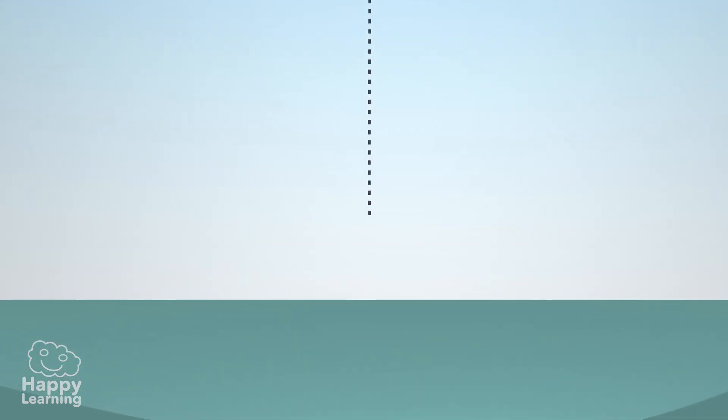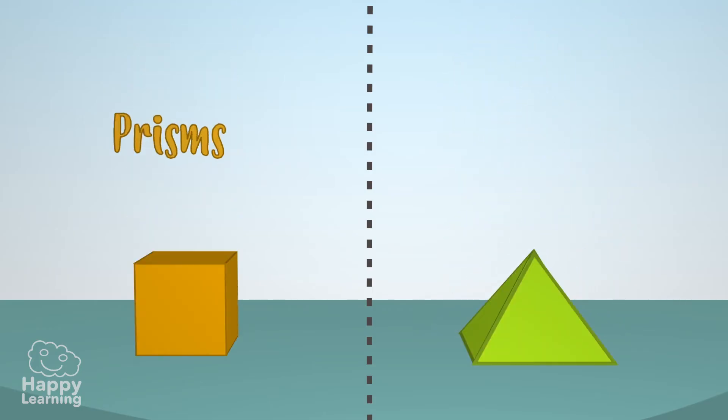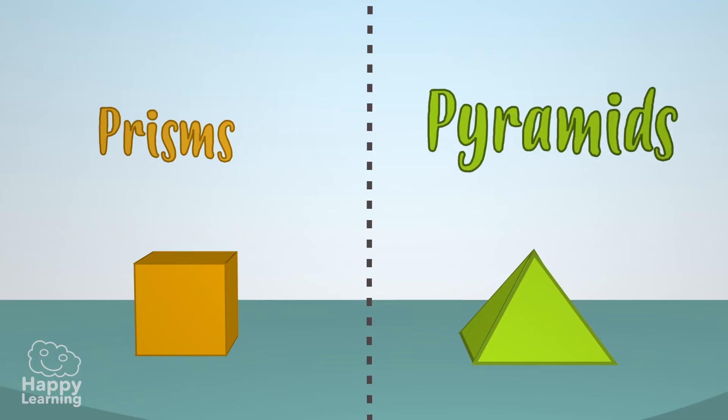Polyhedrons can be classified in many ways, but there are two types that we have to know: the prisms and the pyramids.